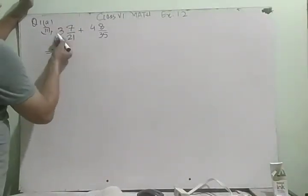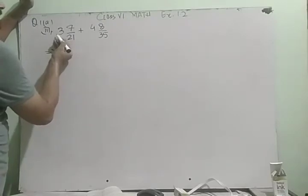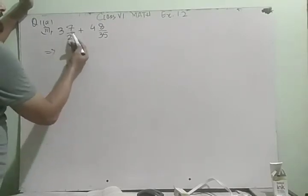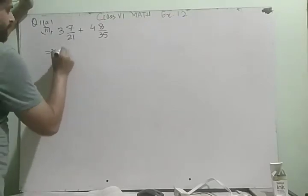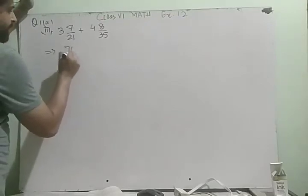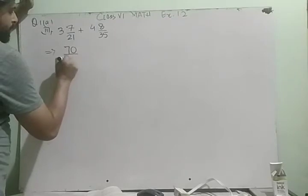21 multiply by 3, 63. 63 plus 7, 70. So 70 upon 21.